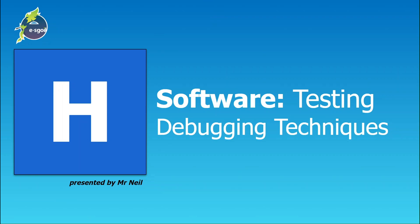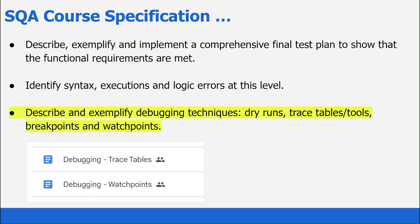Hello there, it's Mr. Neil here. In this video we're going to look at debugging techniques, which is part of the testing topic within the Higher Computing Science Software Design and Development Unit. We are required to describe and exemplify a range of debugging techniques including dry runs, trace tables and tools, breakpoints and watchpoints. In this video we'll perform some dry runs using trace tables and looking at watchpoints as well.